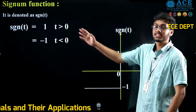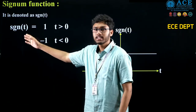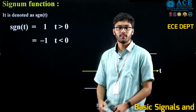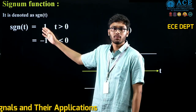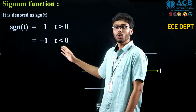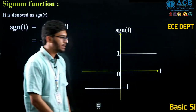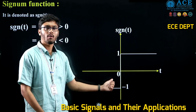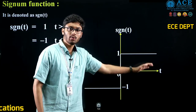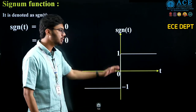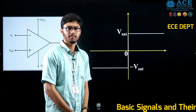Next, we have the signum function, represented by sgn(t). It is defined as: for t greater than 0 its value equals 1, and for t less than 0 its value equals minus 1. In the graphical representation, for t greater than 0 it has a value of 1, and for t less than 0 it has a value of minus 1.